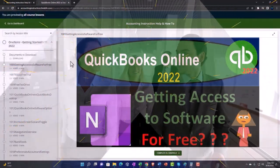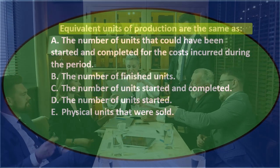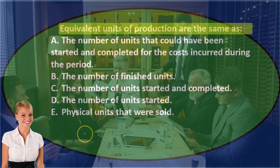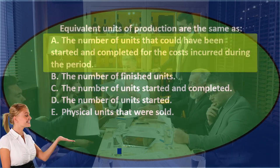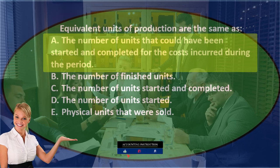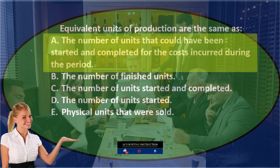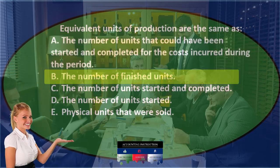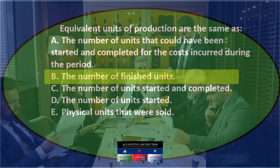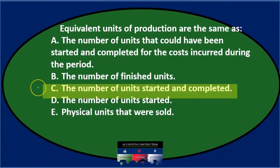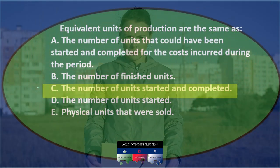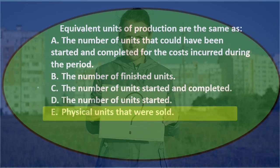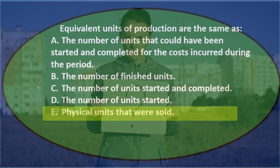First question: equivalent units of production are the same as — A) the number of units that could have been started and completed for the costs incurred during the period, B) the number of finished units, C) the number of units started and completed, D) the number of units started, or E) physical units that were sold.